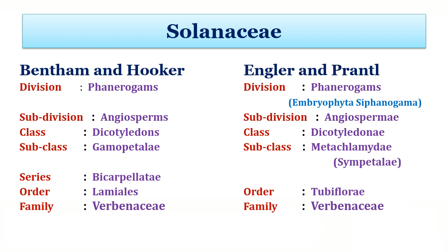This is the systematic position for Family Verbenaceae as per the Bentham-Hooker and Engler-Prantl System of Classification. Unlike the Engler-Prantl system, Bentham and Hooker proposed the series Bicarpellae as an intermediate taxon between subclass and order. Also, to understand the difference between both systems, just look at the different suffix used after the name of the taxon. Another difference is that both systems proposed different names for the subclass and order, though only the differences relevant to this slide are discussed here.